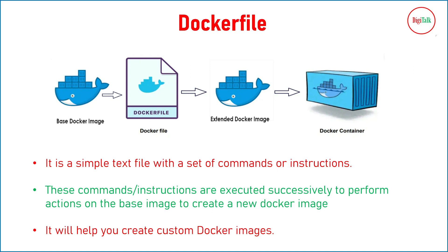A Dockerfile is a simple text file with a set of commands or instructions. You need to learn some basic commands: how to call the base image inside the Dockerfile, how to copy files, and other basics. These command instructions are executed successively to perform actions on the base image to create a new Docker image — all instructions execute in sequence one by one, and when you run the build command you can see all the steps executed on screen.